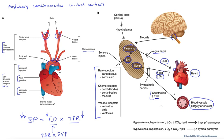During exercise it's interesting, because we get local vasodilation due to metabolic effects, so total peripheral resistance would fall, causing blood pressure to fall. But then the sympathetic system kicks in and causes vasoconstriction in many other places to boost total peripheral resistance overall and keep blood pressure normal even during exercise.